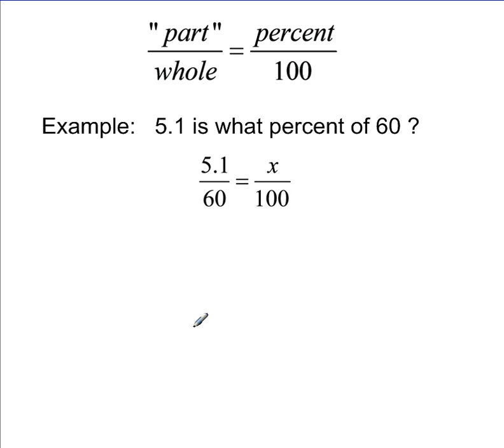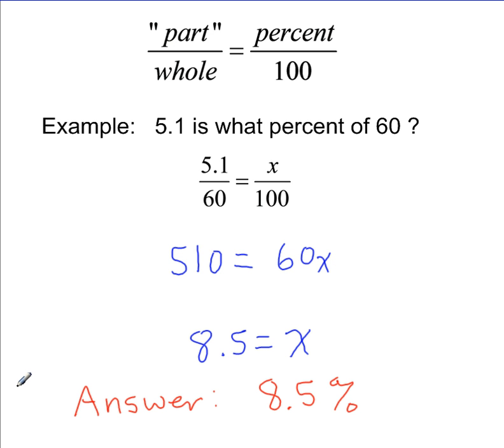The proportion method can be used to find the part, the whole, or the percent. In this example, I'm going to be finding the percent. 5.1 is what percent of 60. I set up my proportion. Now I'm going to cross multiply. Now I'm going to divide both sides by 60. I get x equals 8.5. 8.5 percent is my answer.